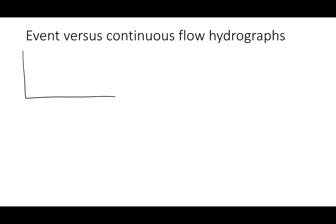Let's look at how a hydrograph looks from a single event versus a continuous hydrograph on a stream. What I have done here is plotted a hydrograph resulting from one single storm — it's a nice-looking hydrograph with a single peak. Most of the time, the time scale for this is from hours to days, maybe a few days, hopefully no more than 10 to 15 days.